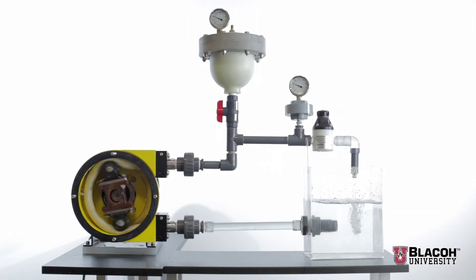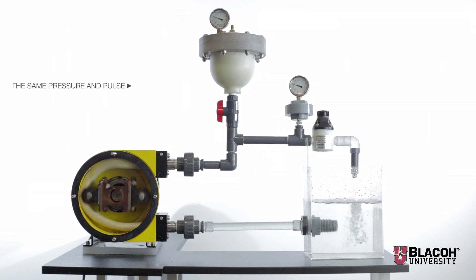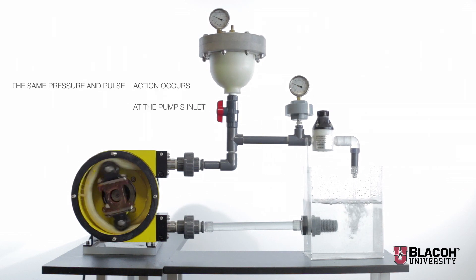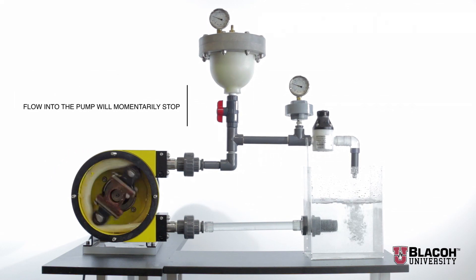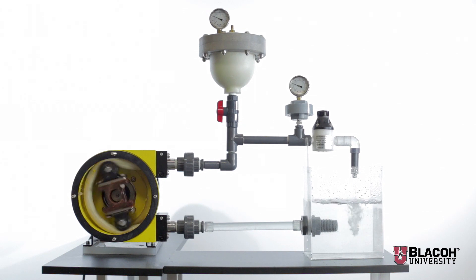While the inlet stabilizer is not pictured in this demonstration, the same pressure impulse action occurs at the pump's inlet. As a roller shoe passes across the pump inlet and closes it off, flow into the pump will momentarily stop.